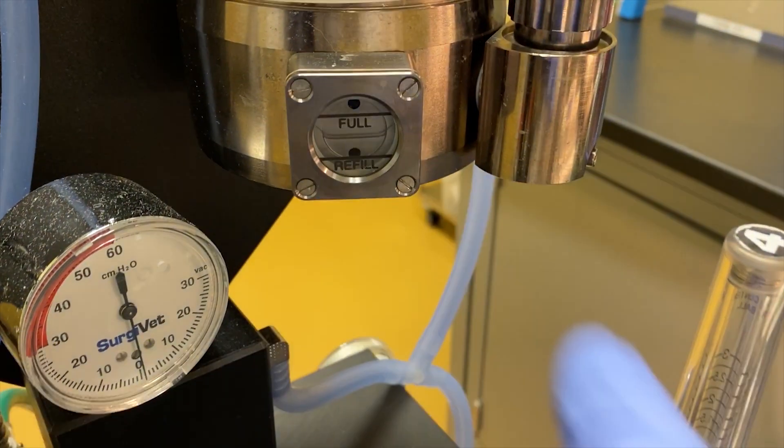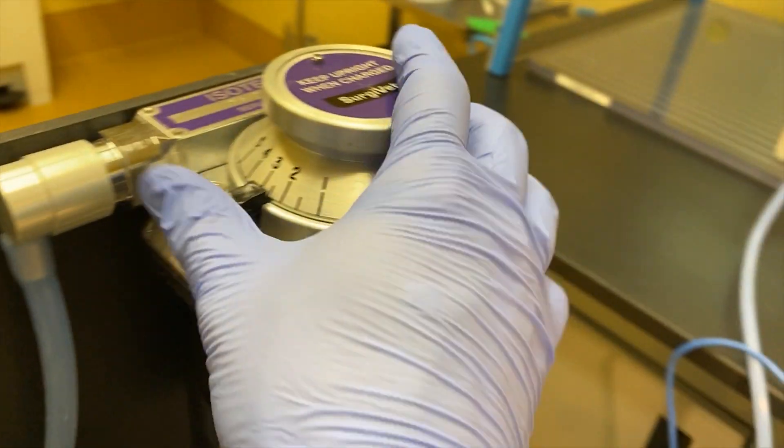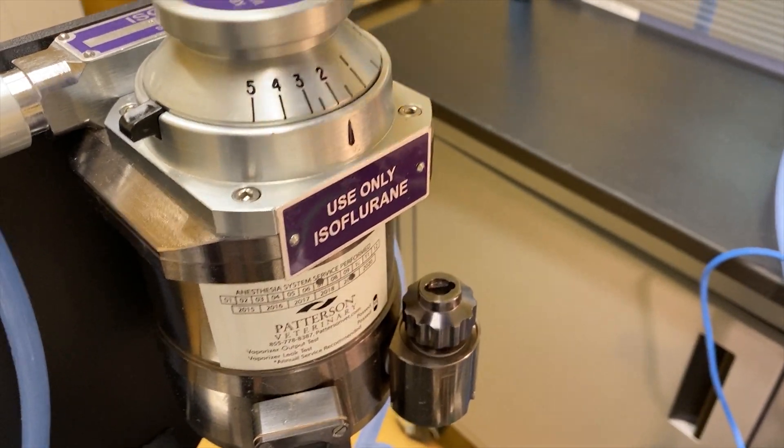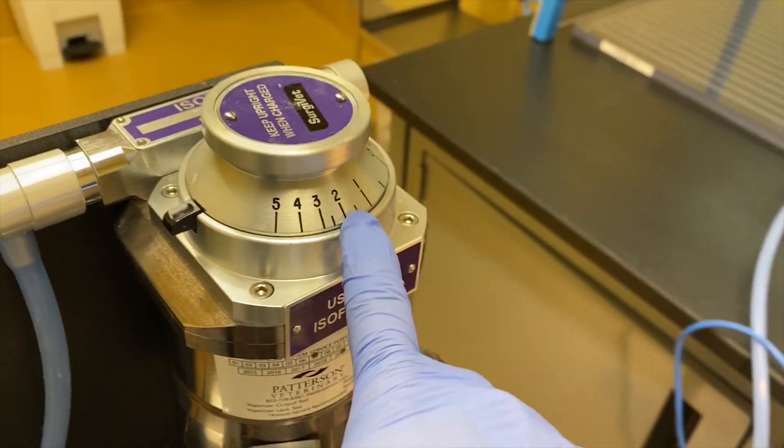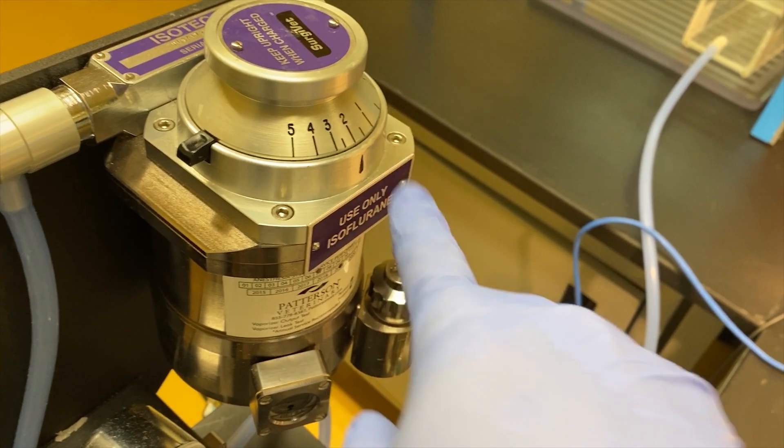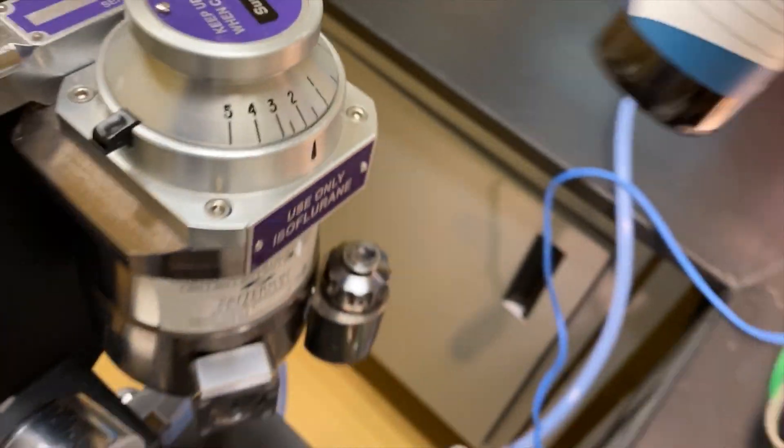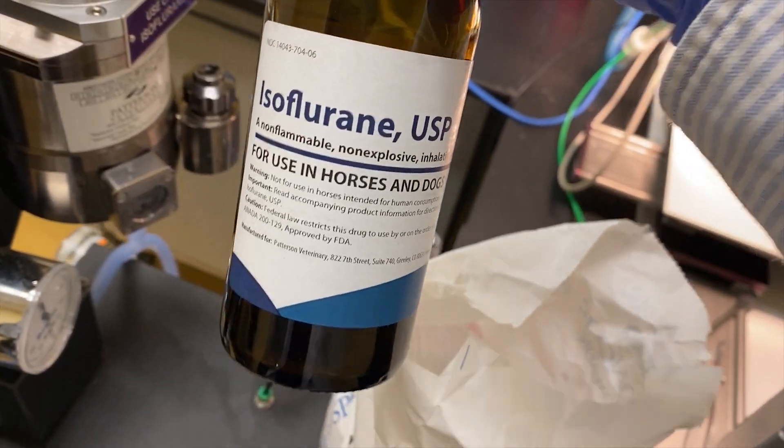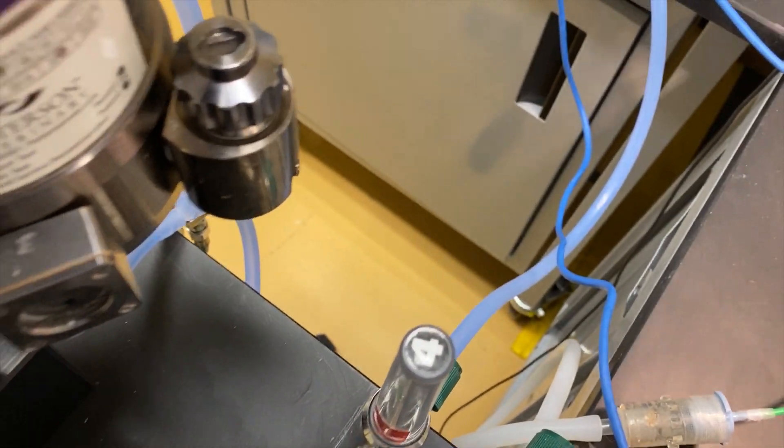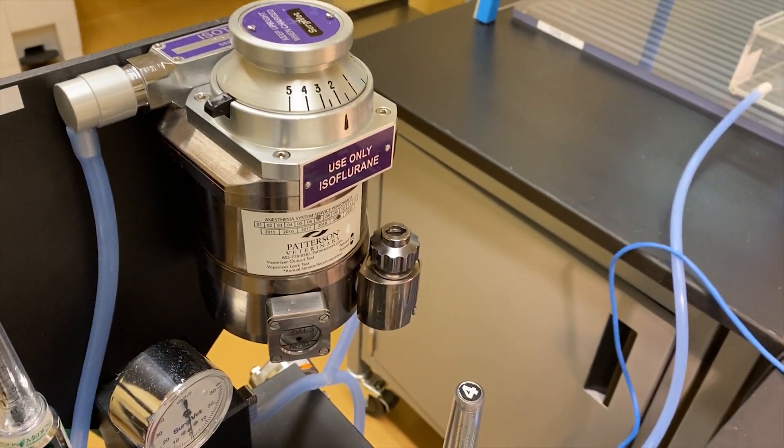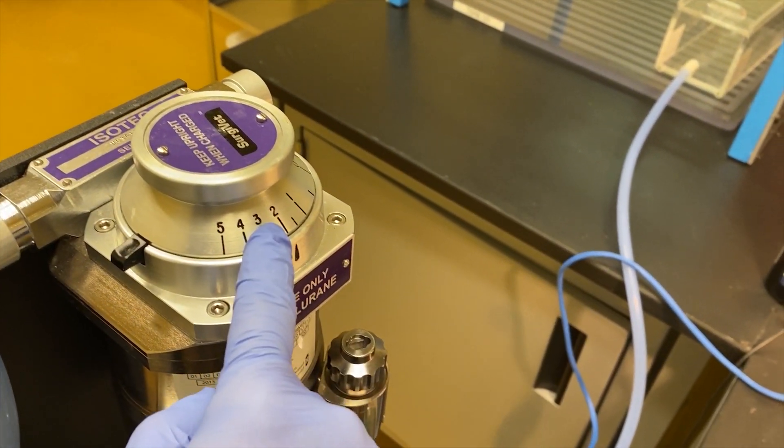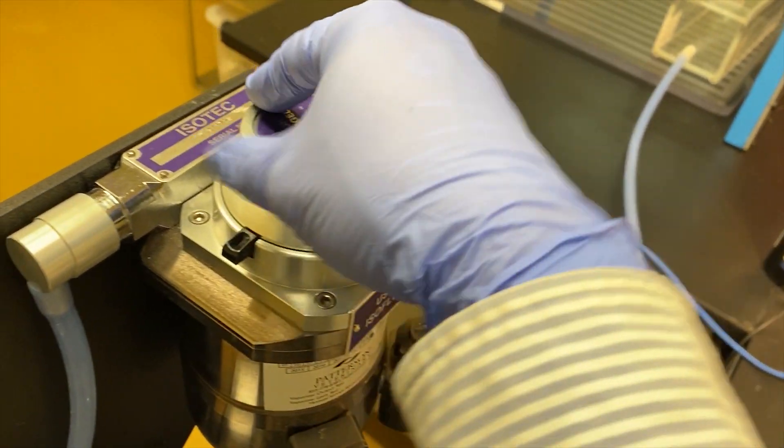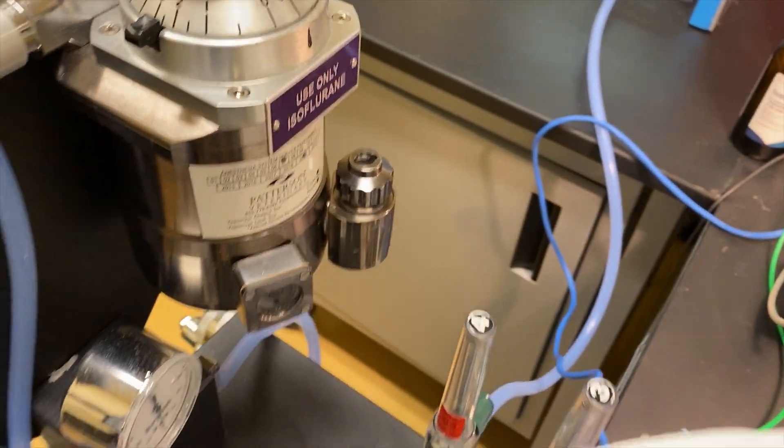And open this device. Most of the time, I will use 2%, so because the isoflurane will affect the mouse heart rate, so the lower is best. So most of the time, I will use 2%, close it.